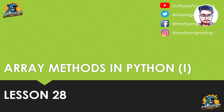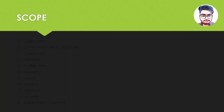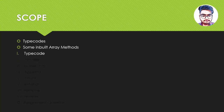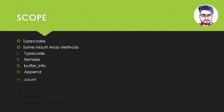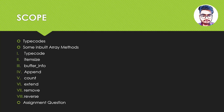This is part one of the video. The scope for today's lesson is we are going to discuss about the various type codes that are available to create arrays, and some of the inbuilt array methods. The first method we are going to discuss is the type code method, the second is the item size method, then the buffer info method, the append method, the count method, the extend method, remove, and the reverse method. Also, I'm going to give you an assignment question in today's video.